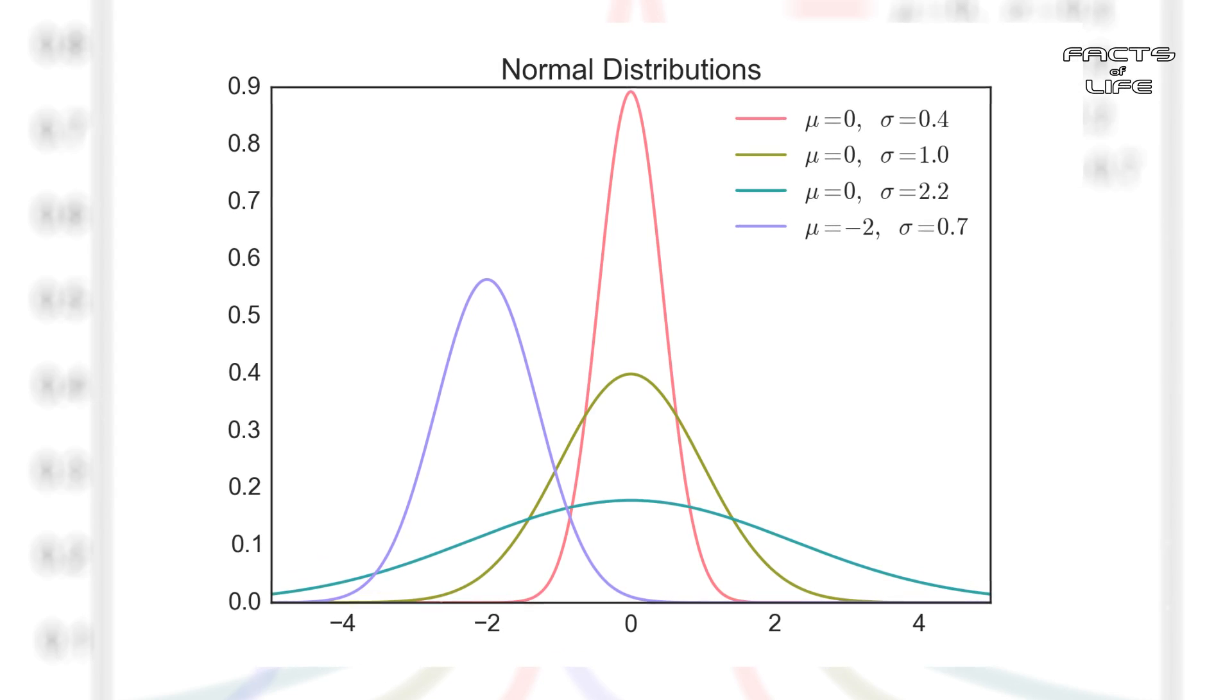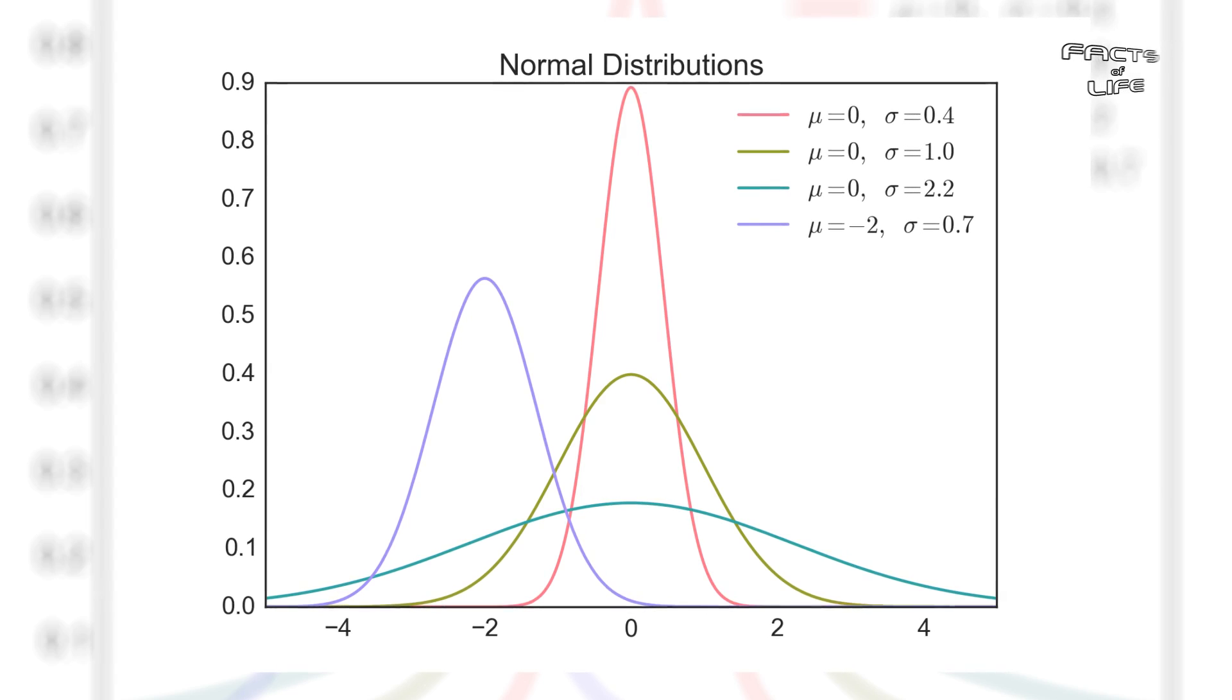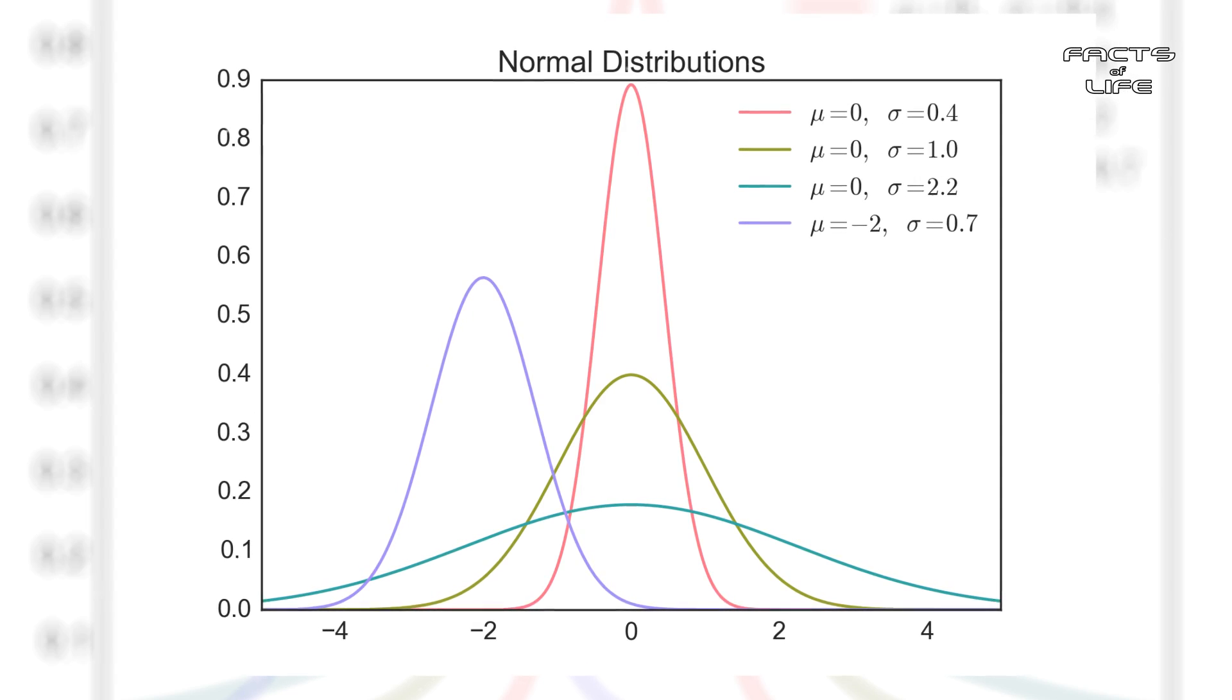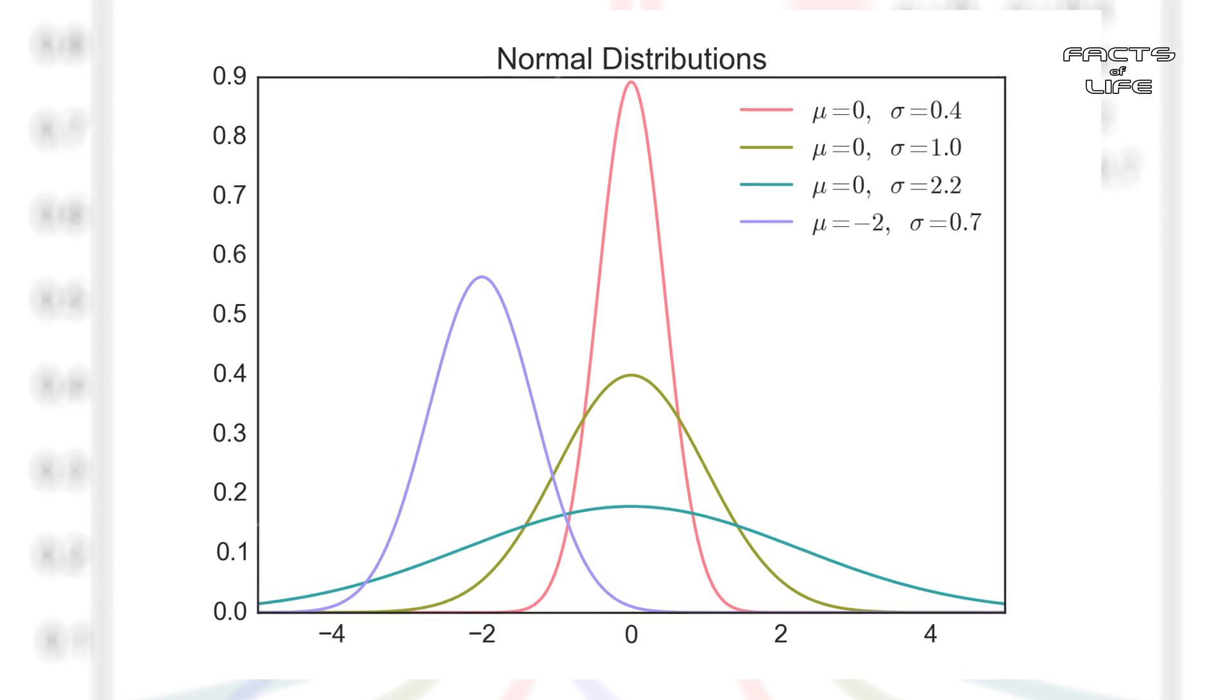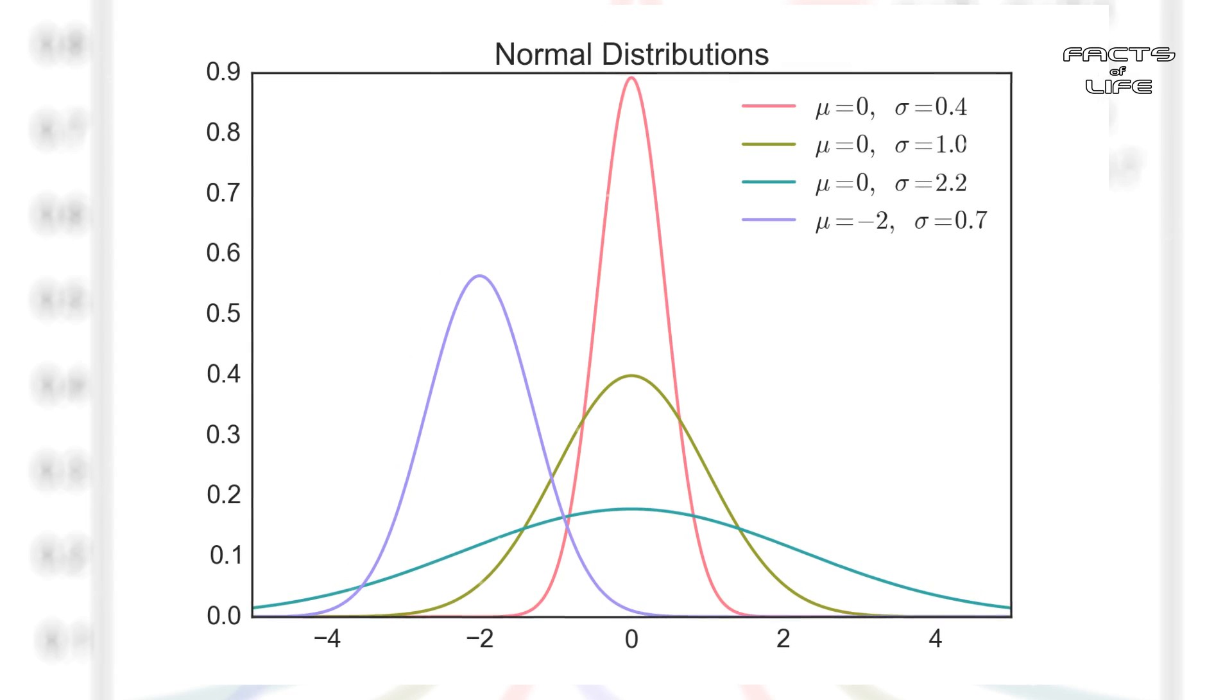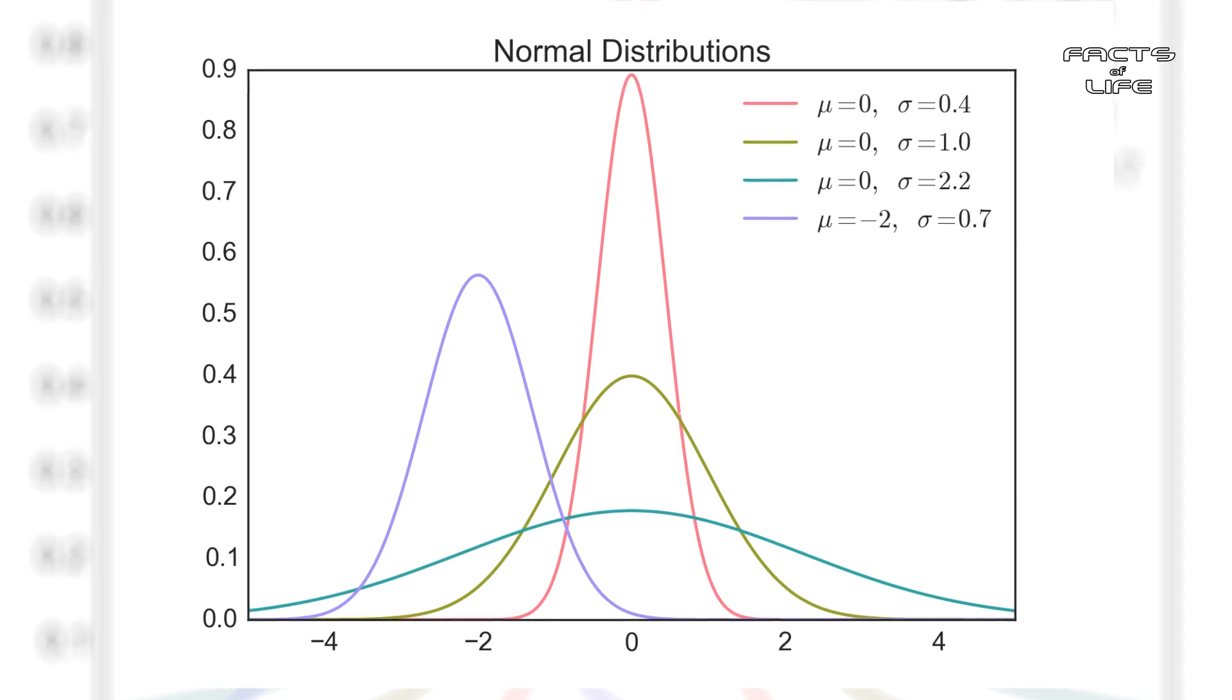One common yet counterintuitive application of a Gaussian integral involves white noise, a normally distributed random variable used to predict everything from wind gusts on a plane to beam vibrations during large-scale construction.